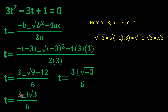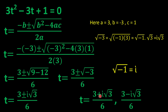So the two solutions from the first equation are t = (3 + i√3) / 6 and t = (3 - i√3) / 6. These are the two values of t from the first section of the question.